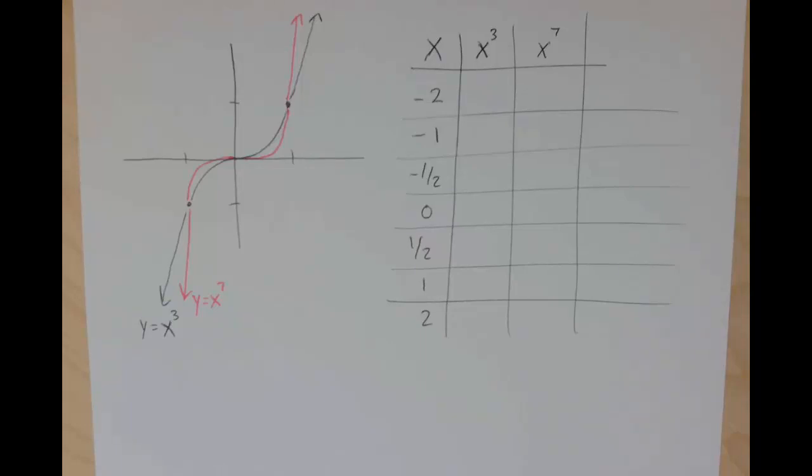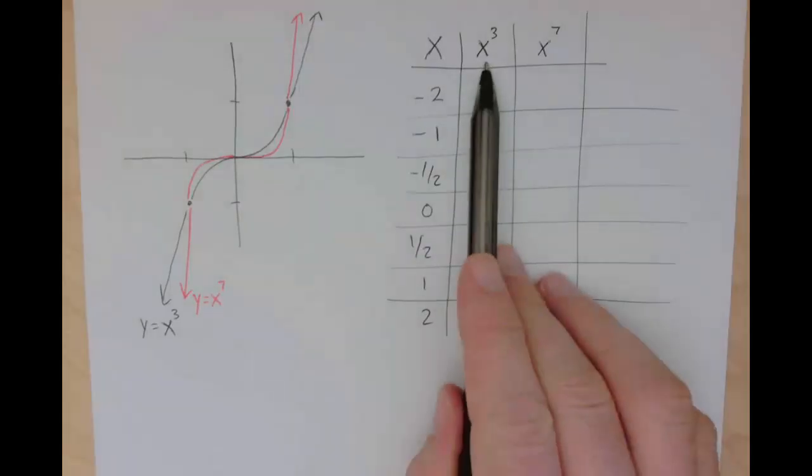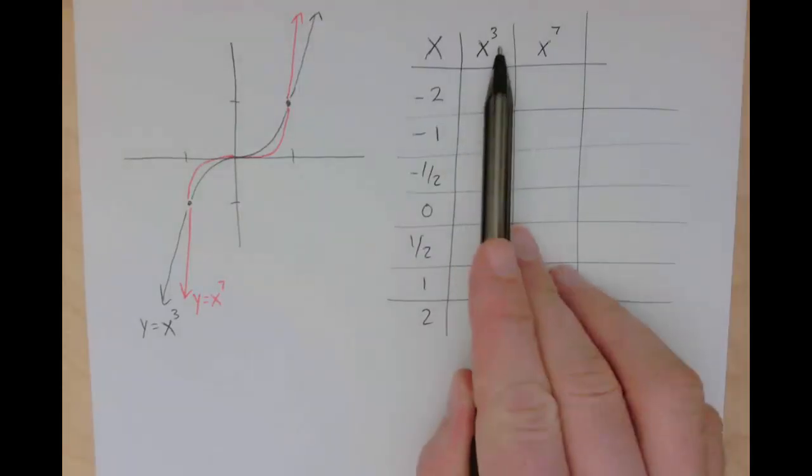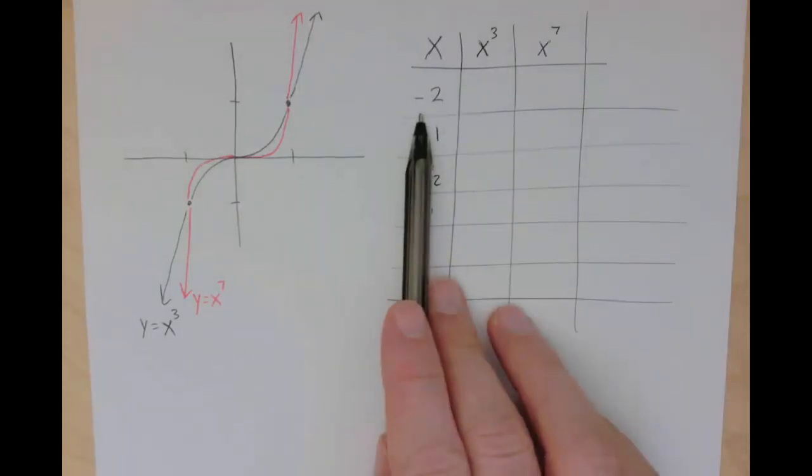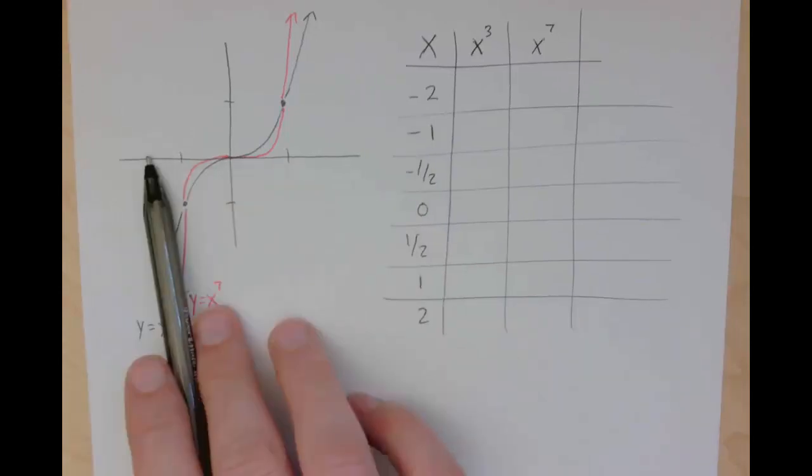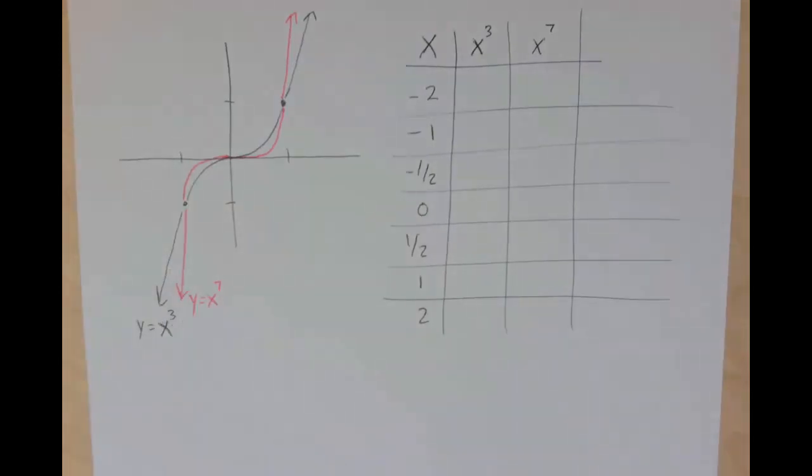For odd powers, the same set of thinking applies. The only difference is that because you're multiplying the input by itself an odd number of times, all of the negatives don't cancel each other out. So if you have a negative input, you're going to end up with a negative output.